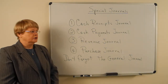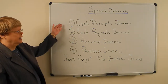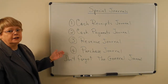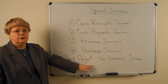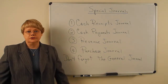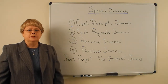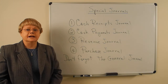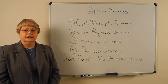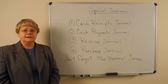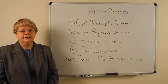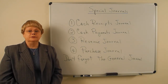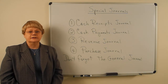There are four special journals: the cash receipts journal, cash payments journal, revenue journal, and purchases journal — and of course we always have the general journal. The purpose of these special journals is to put like transactions in one place. In a manual posting system, it cuts down on manual posting because you post from totals instead of individual amounts.